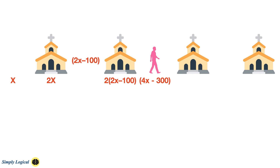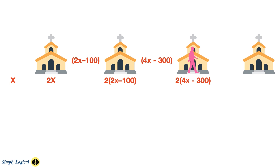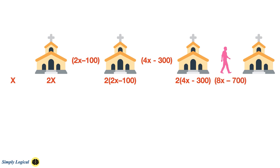And at the third church, as soon as he enters the church, his money is doubled. 4x minus $300 is the money left before visiting the third church. On his way out, he donates another $100. And he is left with 8x minus $700.